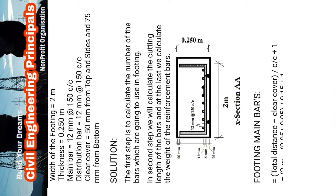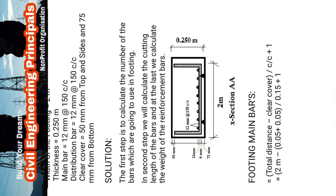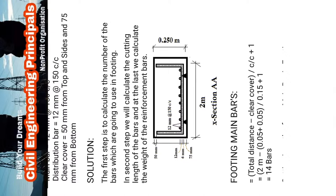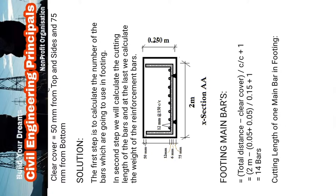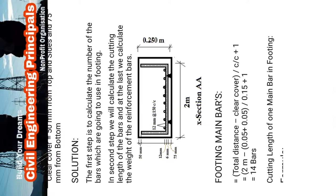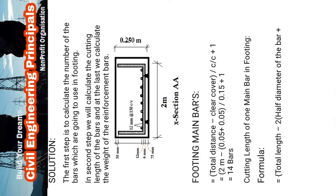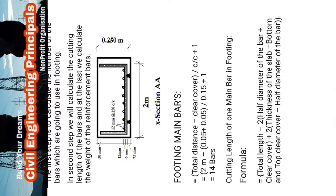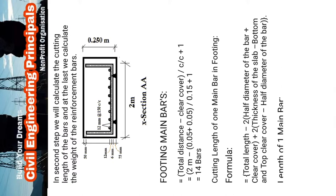Solution: the first step is to calculate the number of bars to be used in the footing. The second step is to calculate the cutting length of the bar. And lastly, we calculate the weight of the reinforcement bar. You can check the cross-section — double A — of the footing main bars.